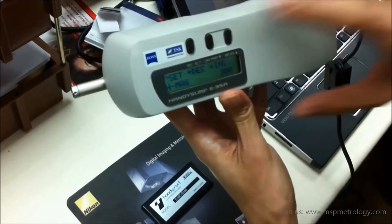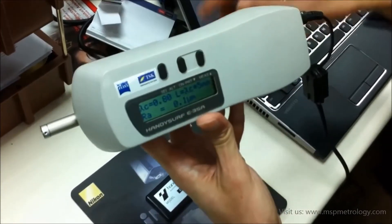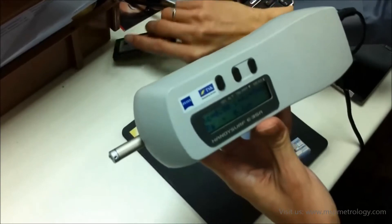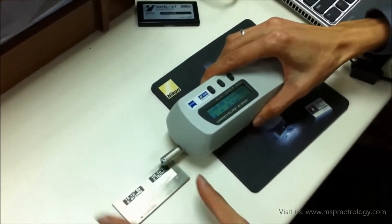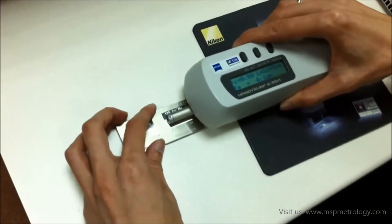I'm going to do a trial measurement to show you how this instrument works. What I need to do is place it flat on the table surface. As long as it's flat, it's fine. Then place it over the test specimen.